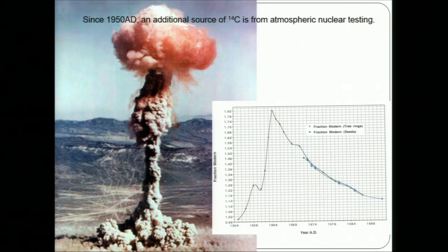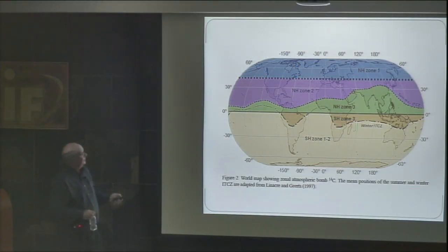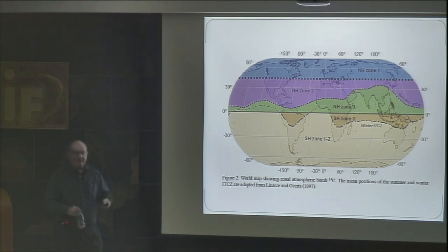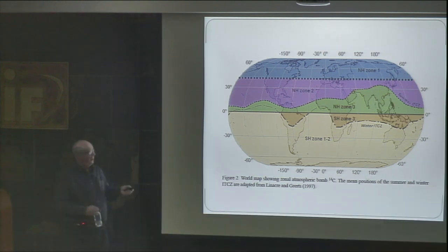This signal has been declining since then and is now basically in equilibrium with the ocean. Because we're adding dead carbon to the atmosphere all the time, this value will continue to decline to a point where it's actually below the original pre-bomb value. Because of bomb testing, we're able to understand the circulation of C-14 in the atmosphere and define different zones for slightly different levels of C-14.